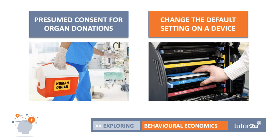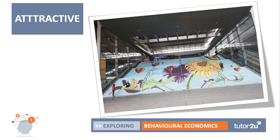Another simple change-the-default nudge is to alter the default settings on a device. For example, you could change the default setting on a thermostat for a home heating system — just bring it down by one degree — or change the default settings on a watch or air conditioning unit. At school, we found we were using huge amounts of paper, and many printers were not set to print both sides. Simply setting printers to double-sided printing is a nice, easy default change that can change behavior.